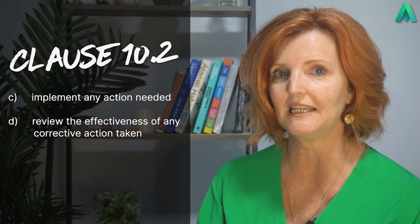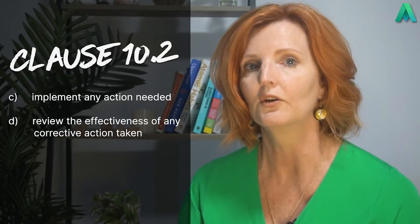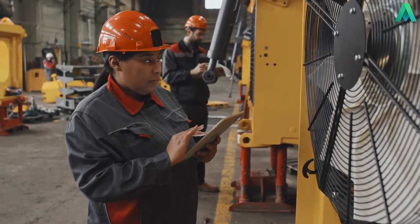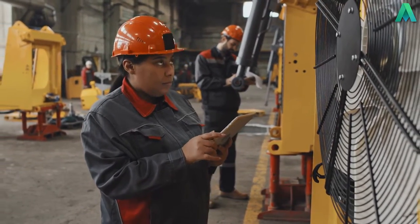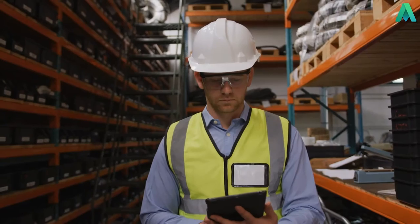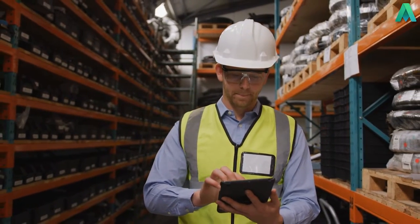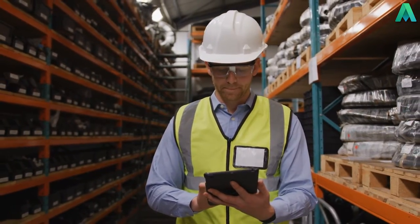This leads into the next part of the clause where it states the organisation shall: c) implement any action needed; and d) review the effectiveness of any corrective action taken. So not only do we implement the corrective action, but we should also give it sufficient time to be followed and used so that we can review whether it has effectively prevented the issue from recurring. In this example, if the root cause was the process for setting up the machine and matching to a correct colour code, then the process would be updated. Training may be conducted, and then the new process is followed and monitored for a period of time — normally based on risk — to ensure the correct colour code is always matched to the correct job.